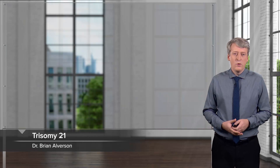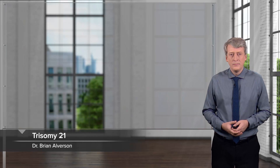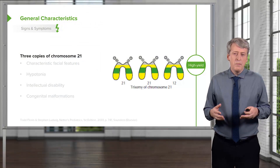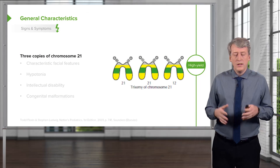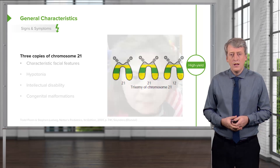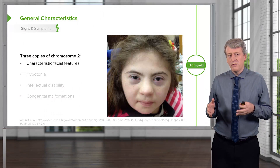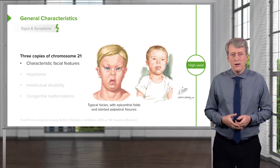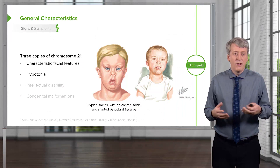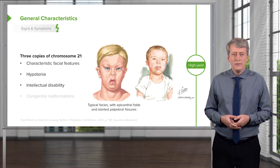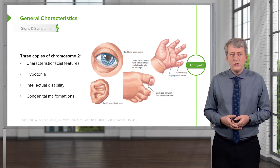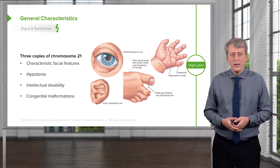In this lecture, we will discuss trisomy 21, or Down syndrome. Trisomy 21 is when a patient has three copies of their 21st chromosome in every cell in their body. These patients have characteristic facial features, like you can see here. They have hypotonia, they have intellectual disability, and they may have congenital malformations. We'll go through these more carefully in this lecture.